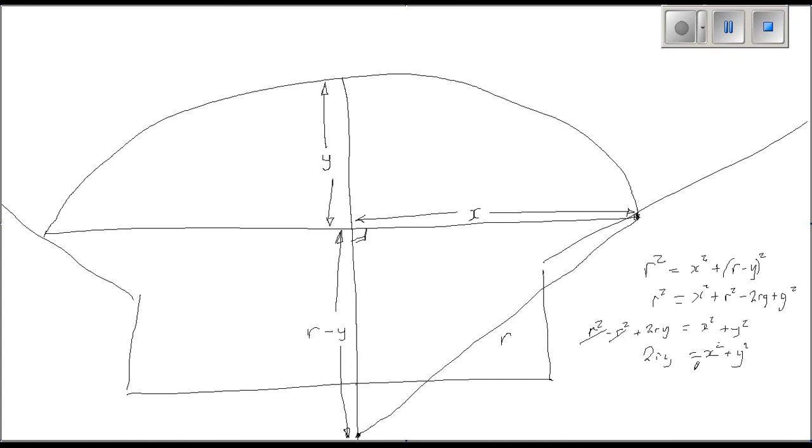And then we move the 2Y over. So the radius is equal to X squared plus Y squared divided by 2Y. And that's, remember the X is something you can measure, and from those you can calculate the radius.